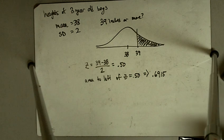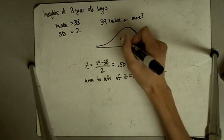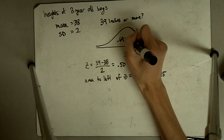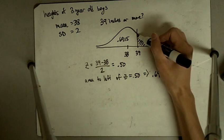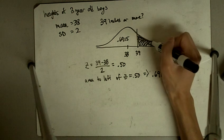And we know our answer is not going to be greater than 50%. We know that because from our picture, we can see that this tail area, whatever it is, this is what we want to know. This is less than 50%.